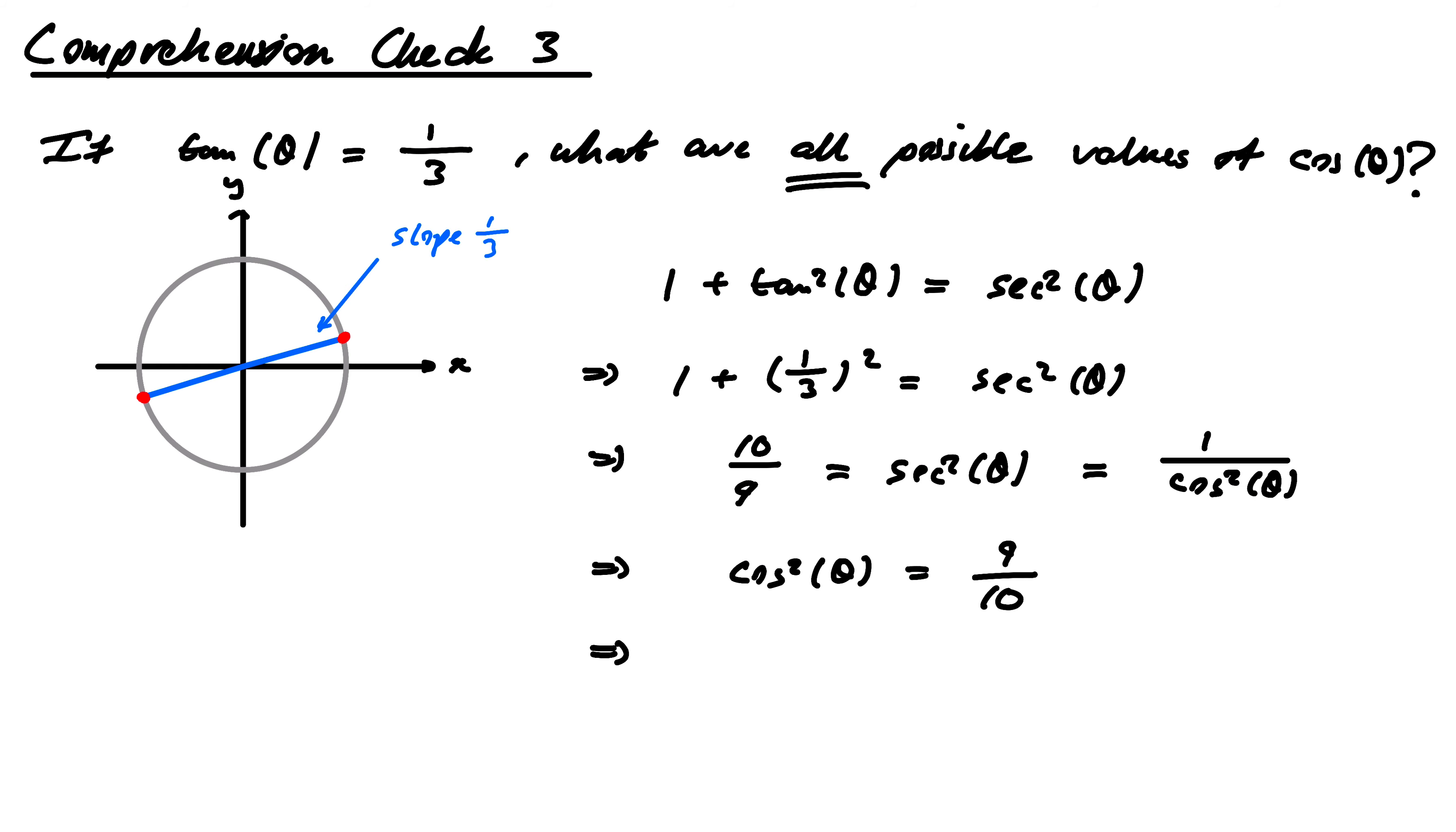And finally, we could take square roots. But I'd have to take the plus and minus, remember, because I know from the unit circle there are two potentials. So this would have to be ±√(9/10). And I'm not going to bother simplifying that. There's absolutely no need.